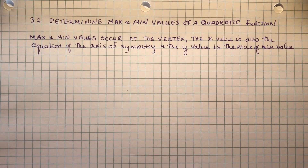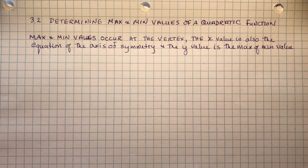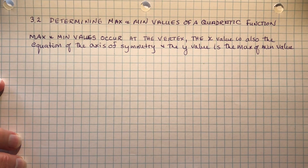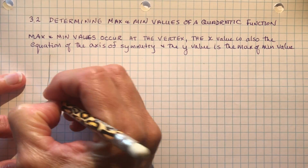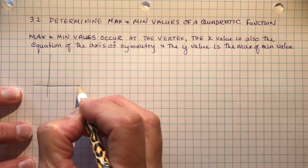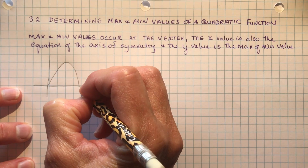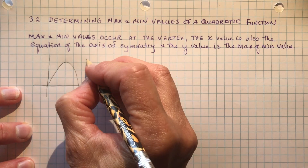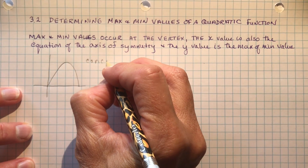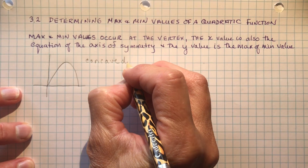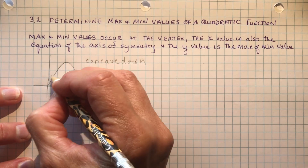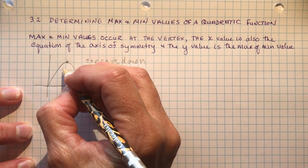When we look at max and minimum values, you know that they're going to occur on the vertex. The x value, which is the equation of the axis of symmetry, and the y value will give you the maximum value. If I did a quick sketch here of a parabola that goes up and comes down — so if it is concave down — it's going to have a maximum value. This is the maximum height of the function.